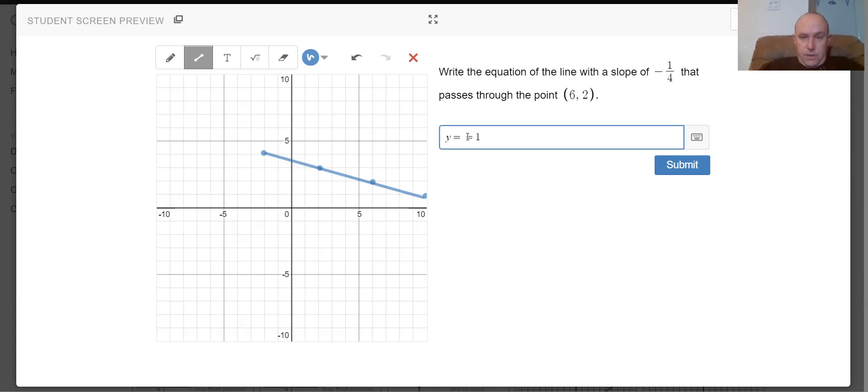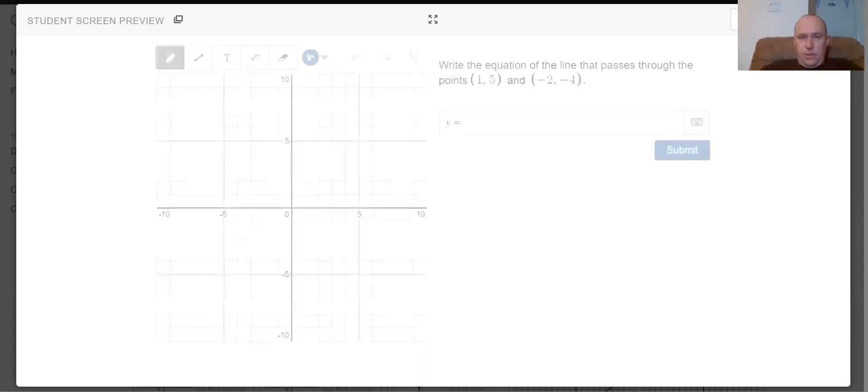So I'm going to go with negative one quarter x plus, I'm going to put 3.5. It actually says that's fine. I actually know if you type in 3.5 and use your fraction to decimal converter, it'll say seven over two. And you can see that it also will accept that answer as well.